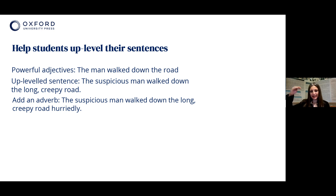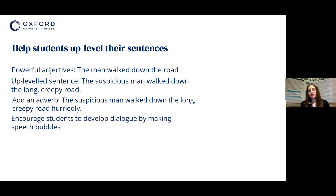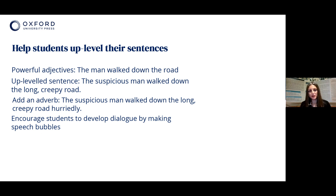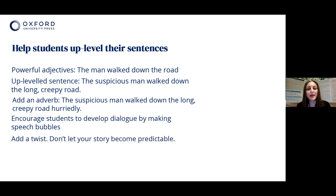The approach is to teach children how to up-level their work step by step — like climbing up a ladder and not doing everything all at once, because that's daunting for primary students. The next step is to encourage students to develop dialogue, perhaps by making speech bubbles, because it looks nice and appears easier to manage. When we separate what is being said into speech bubbles, it's easier for children to have two speakers on either side with speech bubbles in sequence. Then in the while-writing stage, you could teach them how to punctuate their dialogue with speech marks. The twist is also important because we don't want our story to become predictable — sometimes we can have more than one twist.